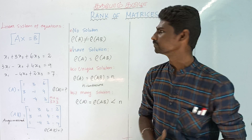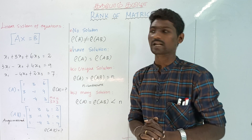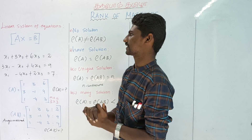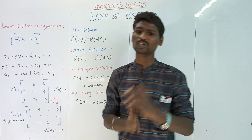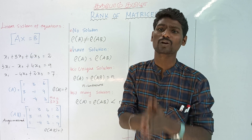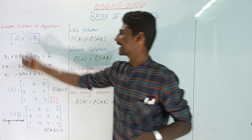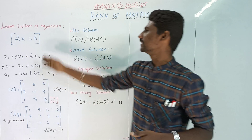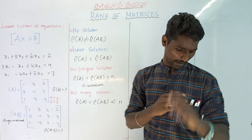What is a linear system of equations? AX is equal to B. In this formula, we will say linear system of equations. What is A? It is a matrix — the coefficient matrix. What is X? It is the unknown matrix. What is B? It is the constant matrix.